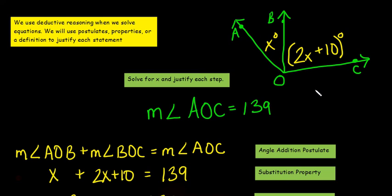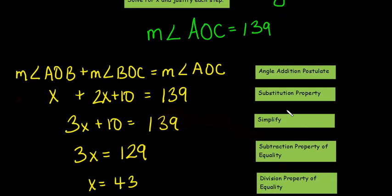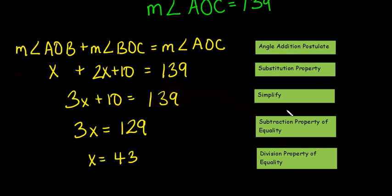So if we take a look at these angles, we're going to solve for x and justify each step that we do. The measure of angle AOC is 139 degrees. I should have put degrees right there, but I didn't. We know that AOB is x, and we know that BOC is 2x plus 10. So, knowing that, here's our proof.